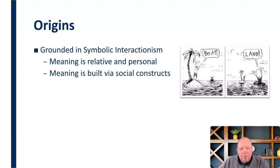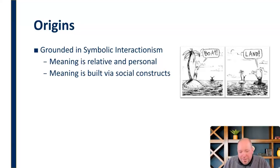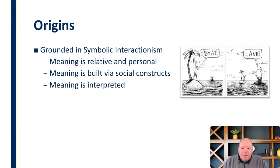According to symbolic interactionism, meaning is relative and personal, but it's also built via social constructs. We assign meaning in part based on how we see things relating to our society — how our culture tells us what is good or bad, how we should think about things. That definitely influences our views, even if it doesn't totally overwhelm them. And meaning is interpreted — it's based on the interpretation of that individual, not specifically defined.